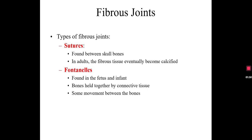The second type of fibrous joint — we also know these — this is what we defined in osteology as the soft spot. We find this in the fetus. The fontanelles have a little bit more space between the bones. There's more connective tissue there that is fibrous tissue, but there's more space and some movement between the bones to allow for growth and for the head to expand.